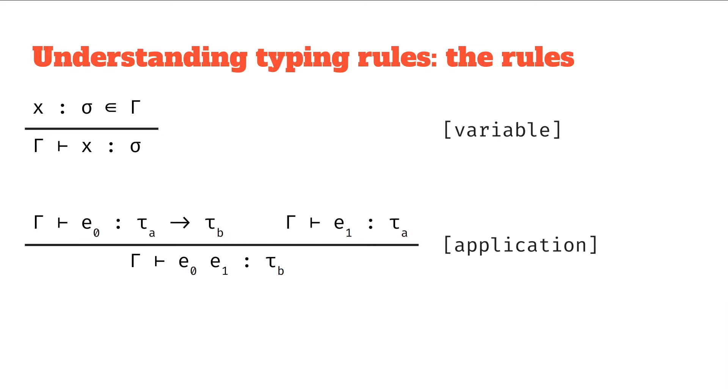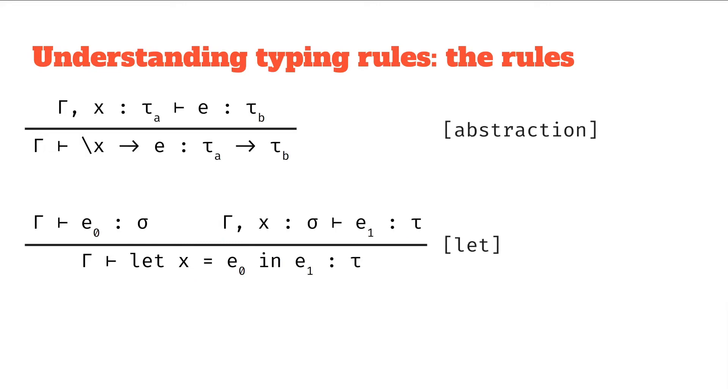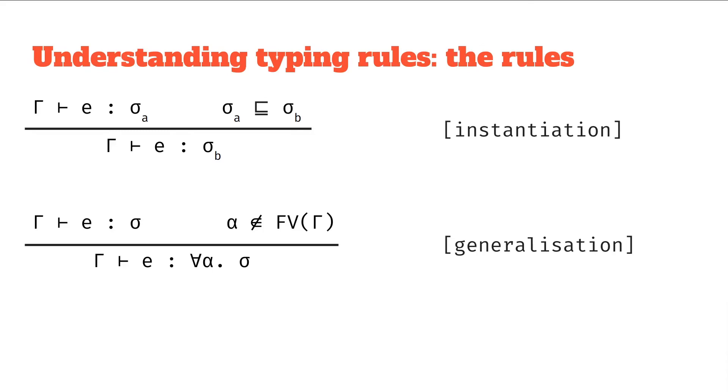They each correspond to an expression and instantiation and generalization. So here we have variables, applications, abstractions, let bindings, instantiation and generalization.